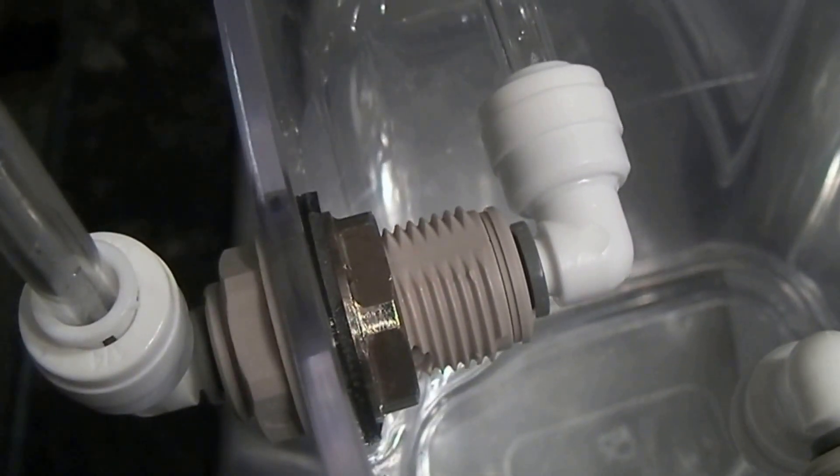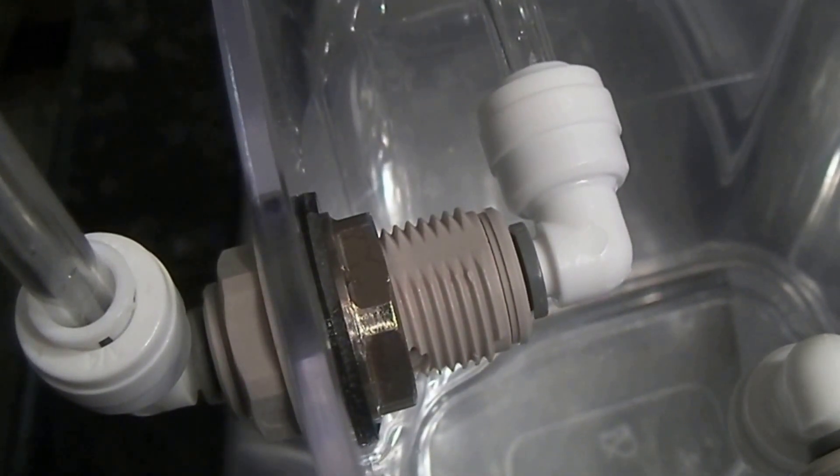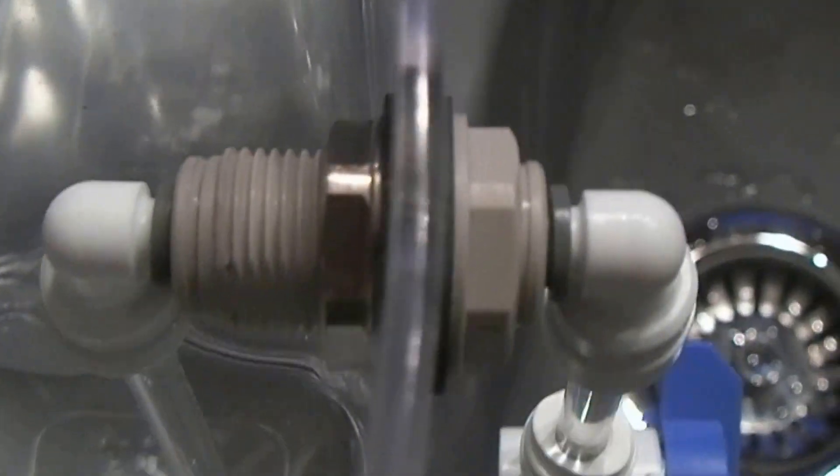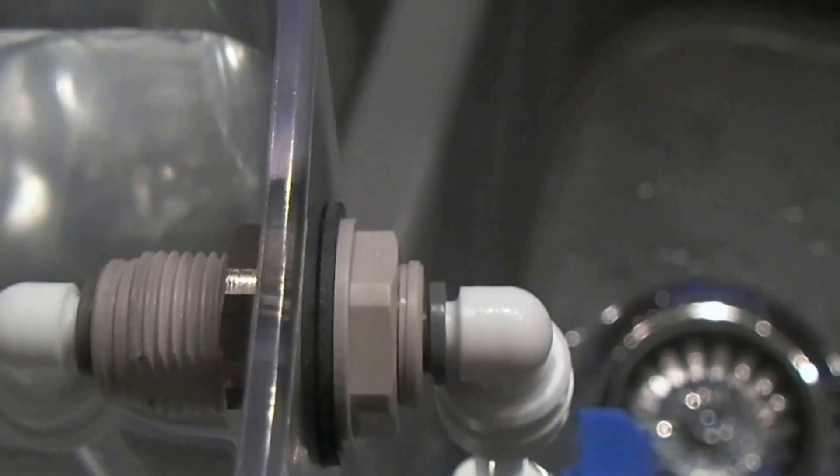Depending on the lid you're using, you could put these bulkheads just through the lid and they wouldn't need the rubber washers. But I wanted to go through the side of the container, so I did need the washers.